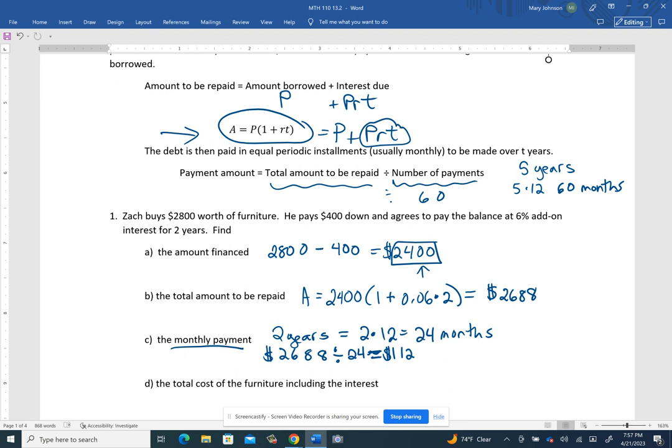So every month we'll pay $112. And then after 24 months, we'll have paid off this amount right here. This total amount, which includes the amount financed and the interest that we had to pay.